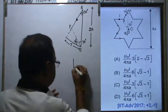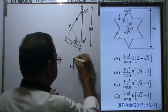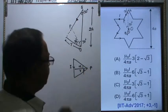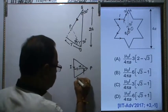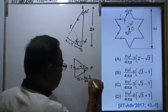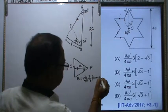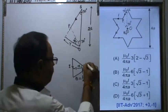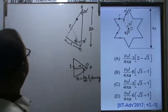For any current-carrying conductor with current I flowing, at a point at distance r, if we join the arms and this angle is alpha and this angle is beta, then the formula is: B equals μ₀/4π times I/r times (sin α + sin β). This is the formula we'll apply here. We need r and the angles.